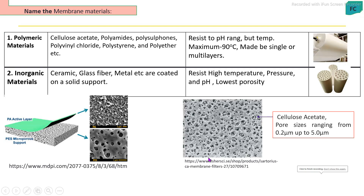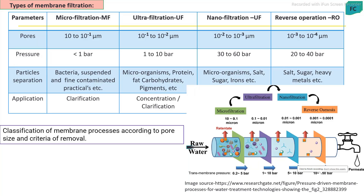Membrane material: the material used in the manufacturing process is the main basic material, classified into two groups. First, polymeric material — that means plastic polymers. During manufacturing, different conditions and parameters are used to change the porosity of the membrane; the membrane may be single layer or multilayer in sheet form. Some membranes are made from inorganic materials like ceramic, glass fiber, and metal. The difference is that inorganic materials are stable at high temperatures and different processing conditions.